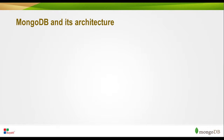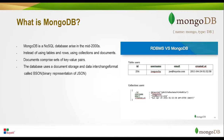Now let's move on to MongoDB and its architecture. MongoDB is a NoSQL database that arose in the mid-2000s. In MongoDB, instead of using tables and rows, you use collections and documents. A document contains a set of key-value fields. The database uses a document storage and data interchange format called BSON — the binary representation of JSON. Collections do not enforce any schema, so documents within a collection can have different fields.